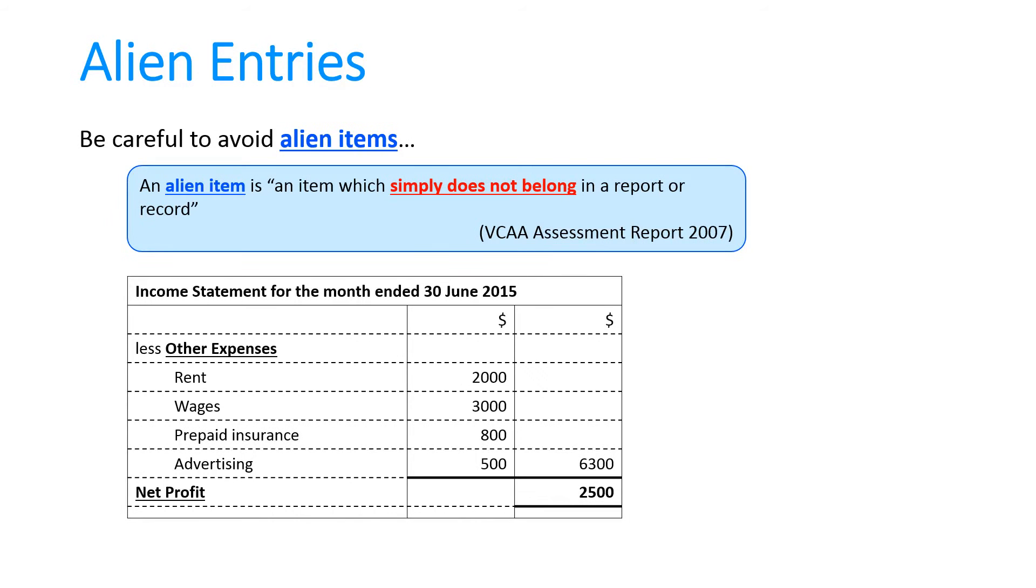So for example, you can see there's an income statement there and we've got the other expenses section with rent, wages, prepaid insurance, and advertising. One of those items simply doesn't belong. The one that doesn't will be prepaid insurance. That's an asset, not actually an expense. So we'd need to put that in the balance sheet and not the income statement.